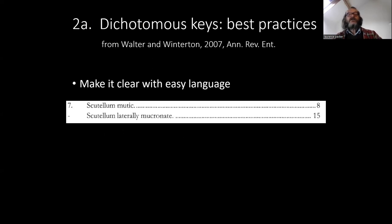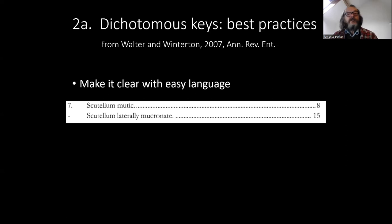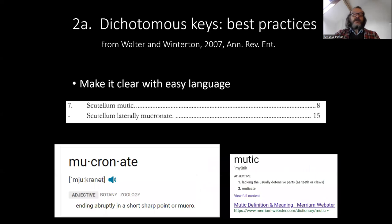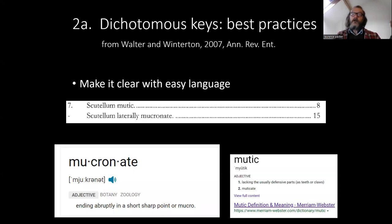Make it clear with easy language. 'Scutellum mutic, scutellum laterally mucronate.' Anybody using a key to identify a bee should know what a scutellum is, but to find out what 'mutic' means you go online and it usually means lacking the usually defensive parts — scutellum defensive? Or 'mucronate'? No — okay, it's got... Why not just say 'spines'? Scutellum without spines, scutellum with lateral spines. It's easy.